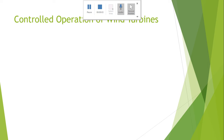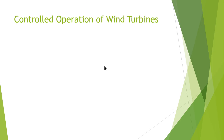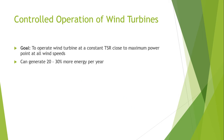Assalamu alaikum. This is lecture number 25 and I will continue with control operation of wind turbines. As discussed at the end of the previous lecture, there are two basic control mechanisms for the maximum power tracking algorithm, which can ensure that 20 to 30 percent more energy can be generated. These schemes are: the first one, the constant tip speed ratio scheme, and the second, the peak power tracking scheme.